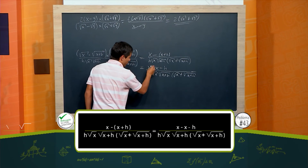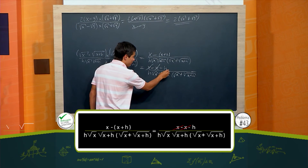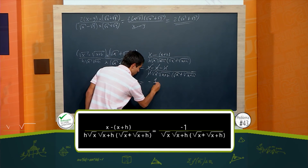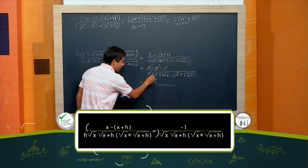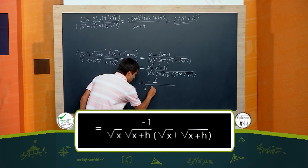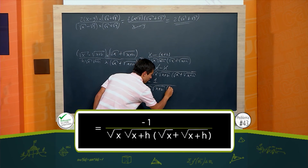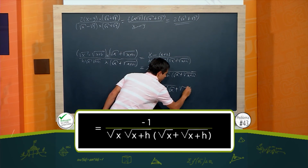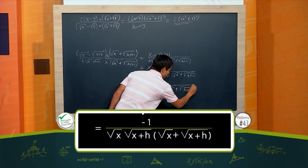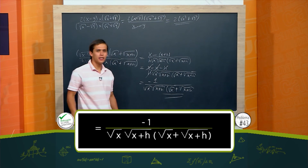Bien, esto me va a dar: se cancela la x, me da menos h, cancelo la h, y me quedó menos 1 en el numerador, y en el denominador nos quedó raíz de x, raíz de x más h, por raíz de x más raíz de x más h, lo cual es la solución del ejercicio.